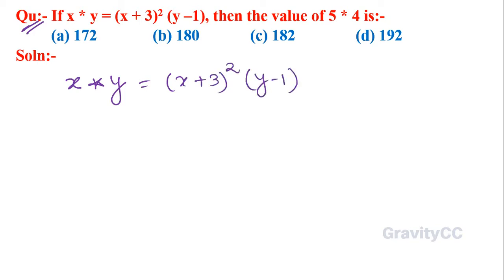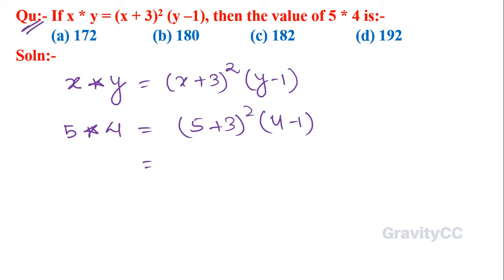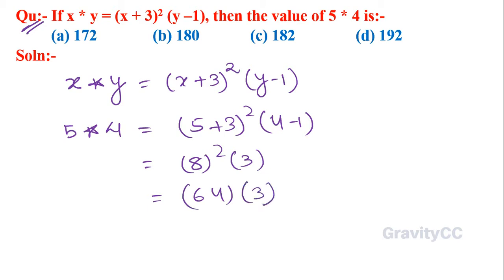So now we replace x by 5 and y by 4: (5+3)² × (4−1). 5 plus 3 is 8, so 8² × 3 = 64 × 3 = 192. So the answer is 192, and option D is the correct answer.